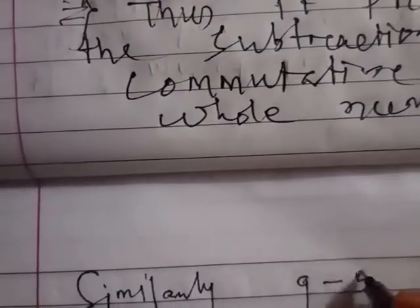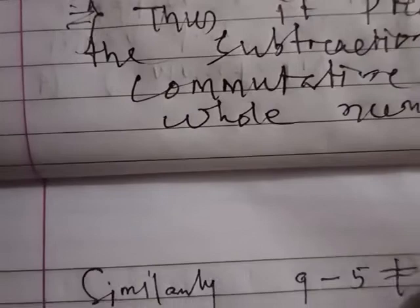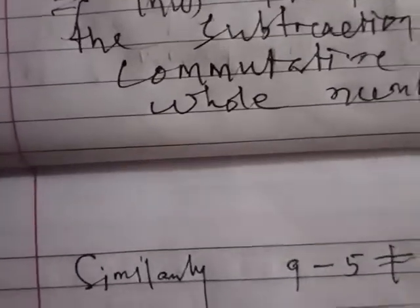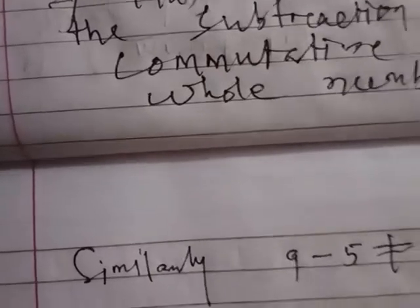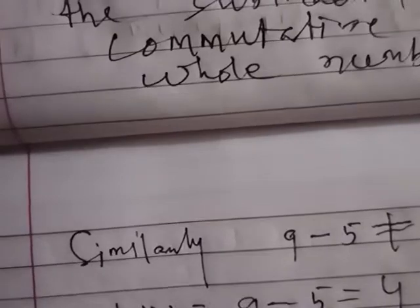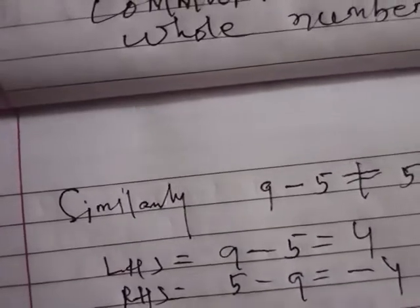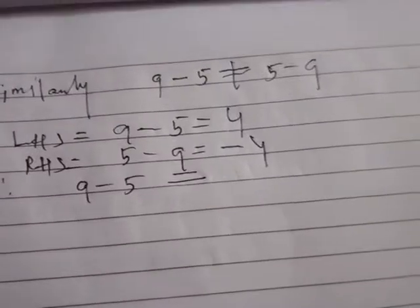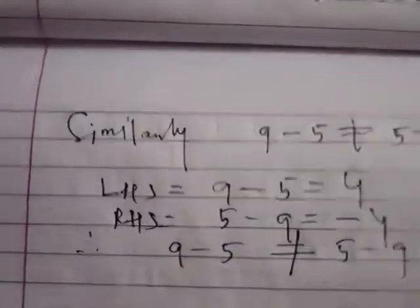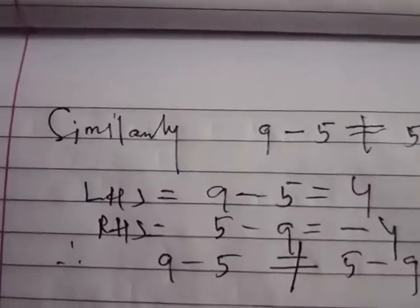Similarly, 9 minus 5 equals 4 on the LHS, and 5 minus 9 equals minus 4 on the RHS. Hence 9 minus 5 is not equal to 5 minus 9.